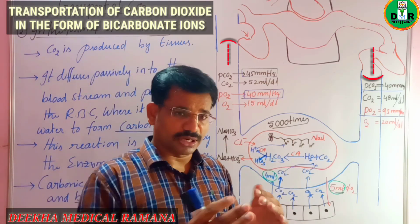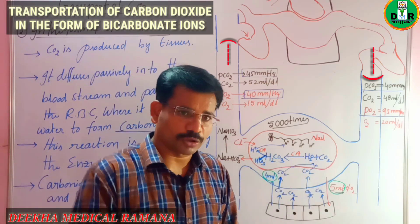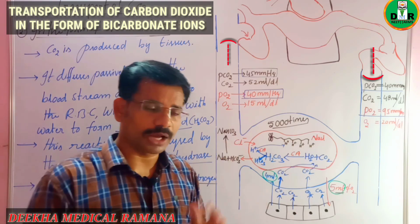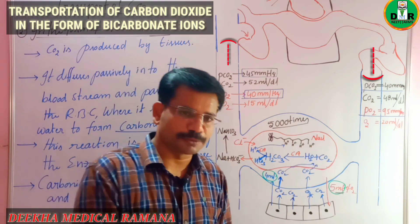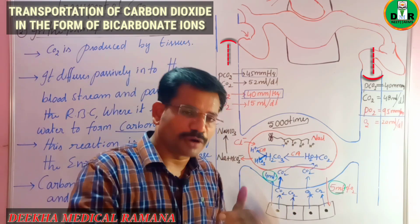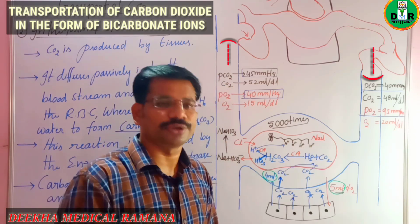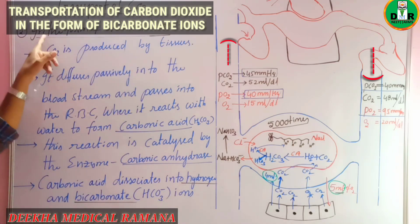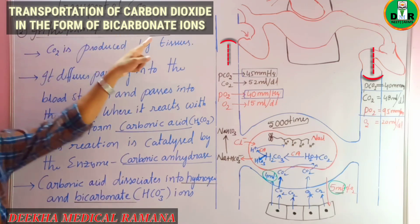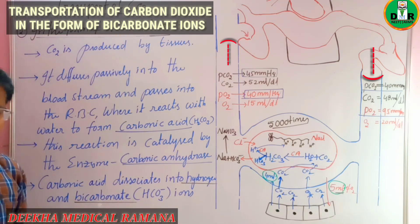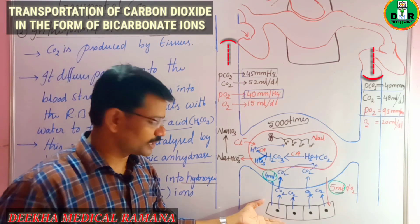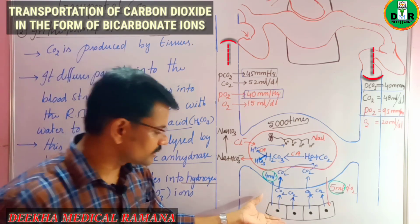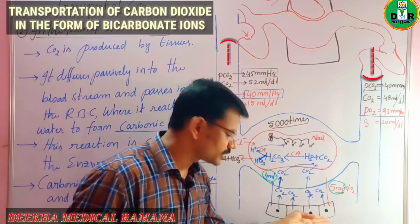In the last lecture, we completed how carbon dioxide is transported in the form of a physical solution. In this lecture, we are going to talk about the second method — transportation in the form of bicarbonate ions — as soon as cellular respiration takes place in the cells.